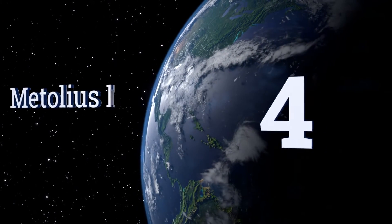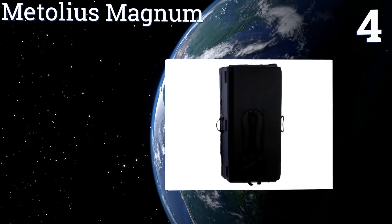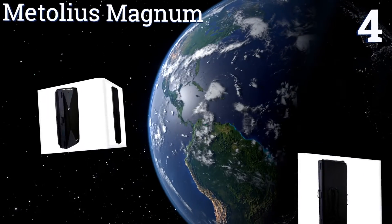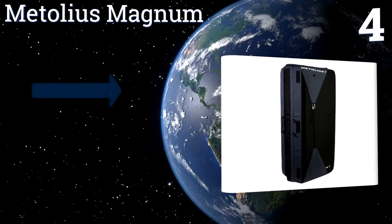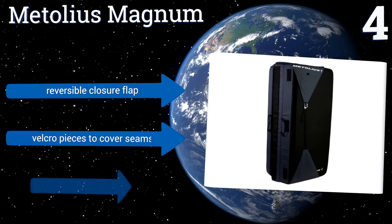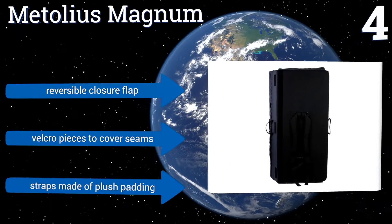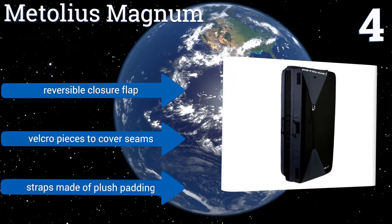At number four, comfortable to carry and comfortable to land on, the Metolius Magnum uses a foam sandwich designed to absorb maximum impact. In addition, it features a small external pocket and a large internal pocket for storing a variety of items during transport or while in use. It includes a reversible closure flap, velcro pieces to cover the seams, and straps made of plush padding.